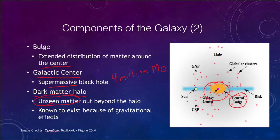Out beyond that, not shown in the image, is a dark matter halo. We can see the visible halo itself, but there is also much more unseen dark matter around it. We know that it exists because of gravitational effects. There must be far more mass than we can possibly see, and dark matter is one of those things that astronomers are continuing to study today.